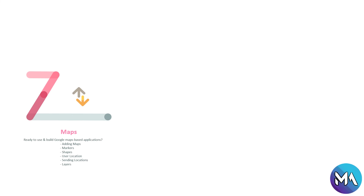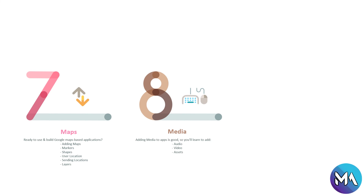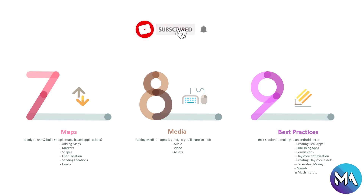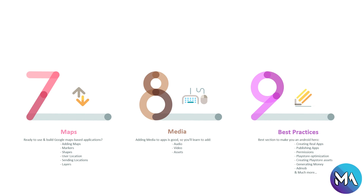Moving to section eight, we discover what media is and how to use it in apps — adding audio, video, and other assets. Section nine is the best section, making you an Android hero. We will start by building real apps, publishing apps, handling permissions, Play Store optimization, creating Play Store assets, generating money with AdMob, and much more.